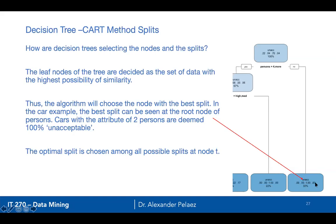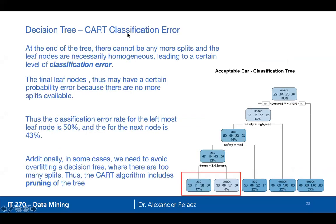These are the four levels. If I look at the target variable, they will be in alphabetical or numerical order. In this case, unacceptable has 100% of the data in its box, and this 33% represents 33% of all of the data — meaning 33% of all data will be unacceptable from this leaf. 22% will be unacceptable from another leaf. The top node is 100%. Looking at the root node: 22% acceptable, 4% good, 70% unacceptable, and 4% very good.